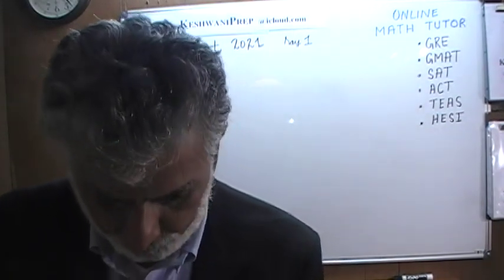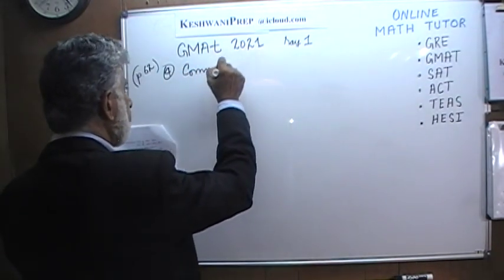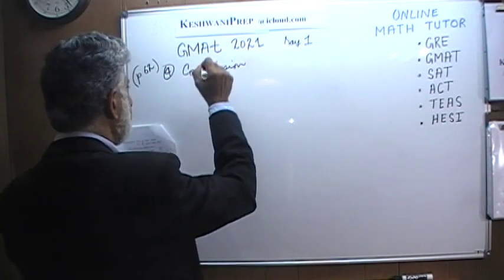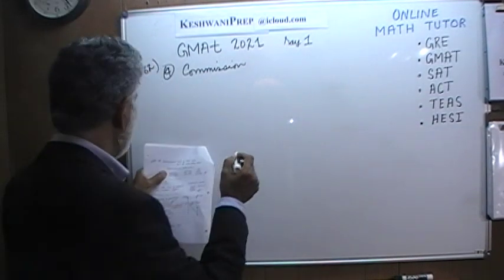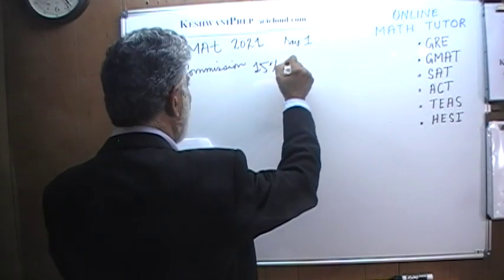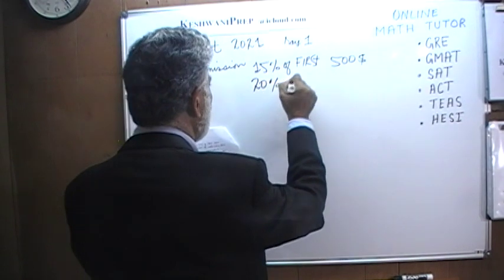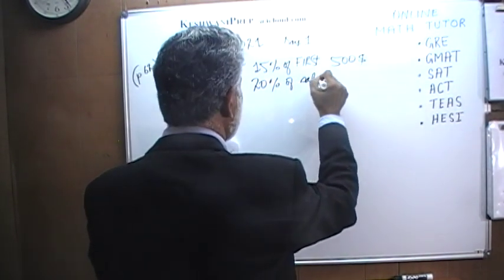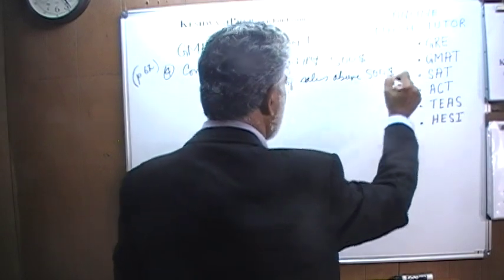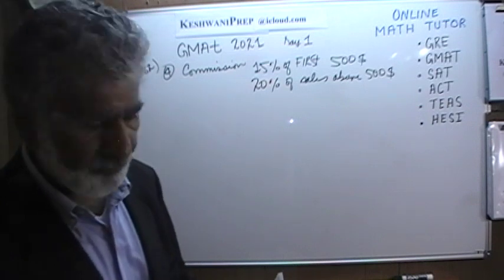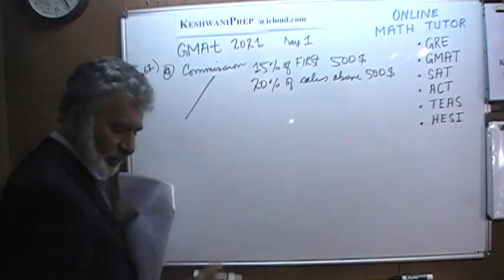Number four: a person gets commission — 15% of the first $500 of sales, and 20% of sales above $500. The question is: what is the commission on $1,300 of sales?